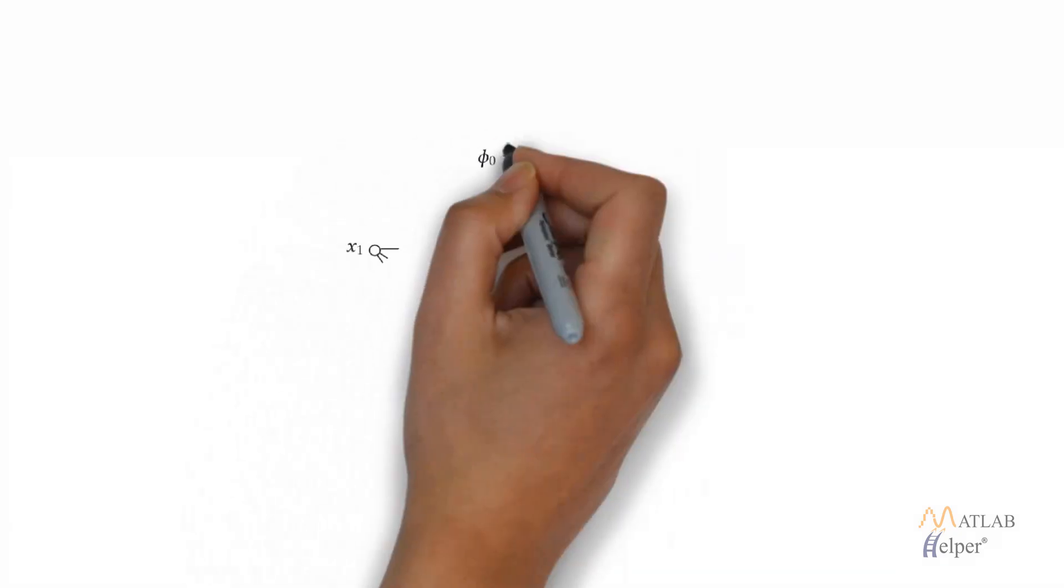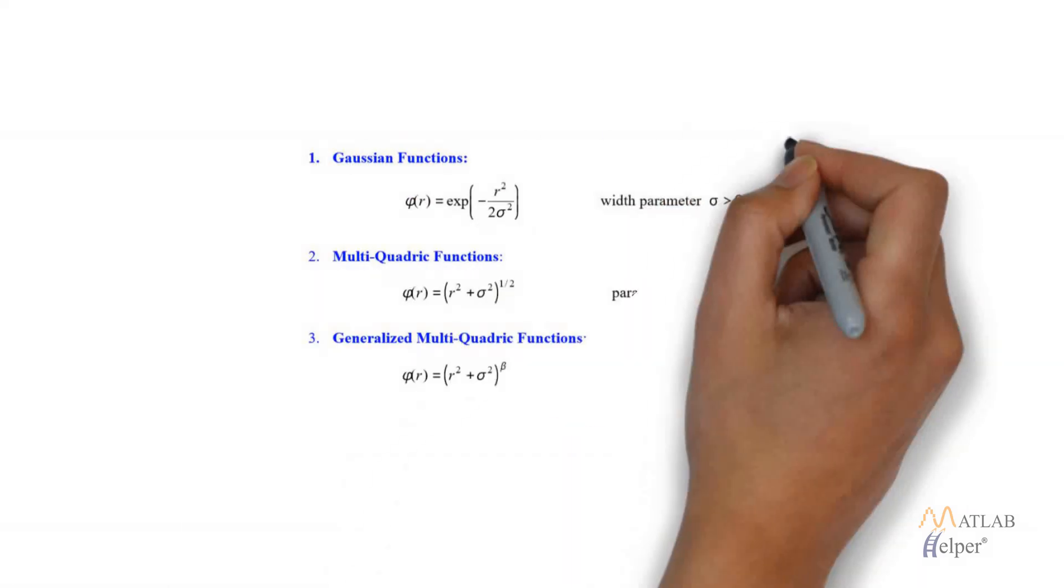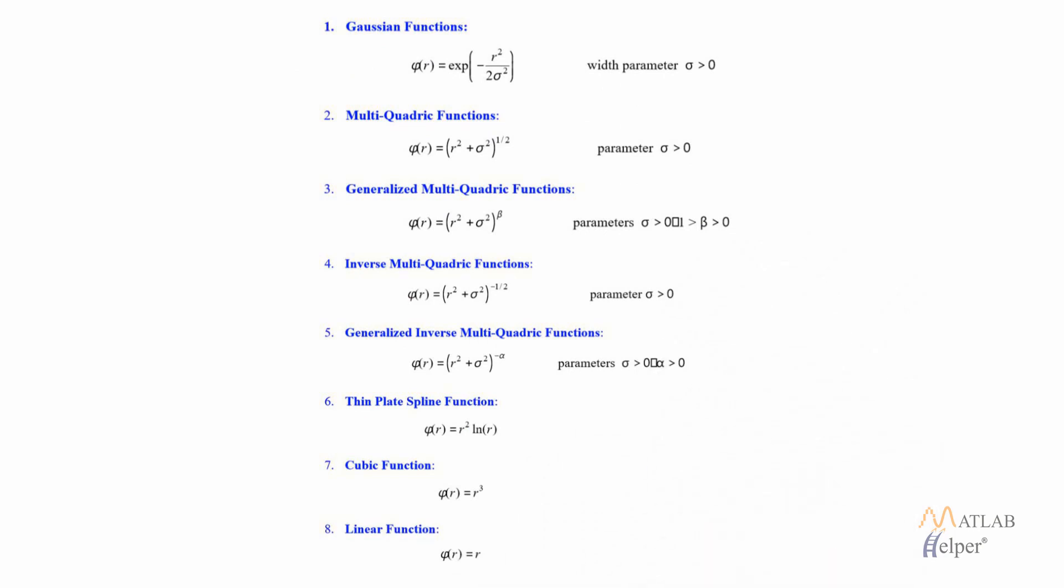As you can see in the figure, the hidden layer consists of neurons which use a radial basis function denoted by phi as their nonlinear activation function. The commonly used radial basis functions are shown on the screen and the most commonly used is the Gaussian function represented by the first equation.